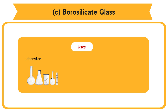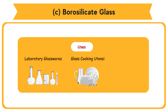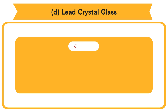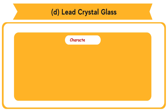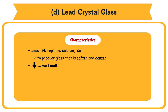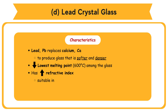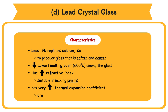Uses of borosilicate glass: Laboratory glassware, glass cooking utensils, and car lamps. Lead crystal glass Composition: Silica SiO2 - 55%, Lead oxide PbO - 30%, Others - 15% including soda and Na2CO3. Characteristics: Lead (Pb) replaces calcium (Ca) to produce glass that is softer and denser. Lowest melting point of 600°C among the glass types. Has high refractive index and is suitable for making prisms. Cracks easily by heating because it has a very high thermal expansion coefficient.